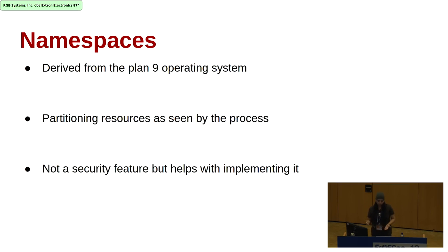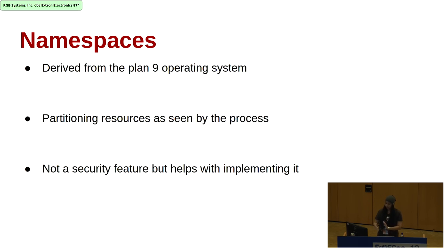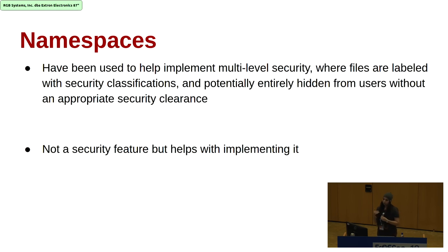Namespaces were derived from the Plan 9 operating system, which was a research extension of Unix. They partition resources that can be seen by a process. Each process can be launched with its own private temporary directory, invisible to other processes, working seamlessly with existing application code to eliminate entire classes of security threats. While not strictly a security feature, namespaces help implement security features and have been used to implement multi-level security, where files are labeled with security classifications and potentially hidden from users.